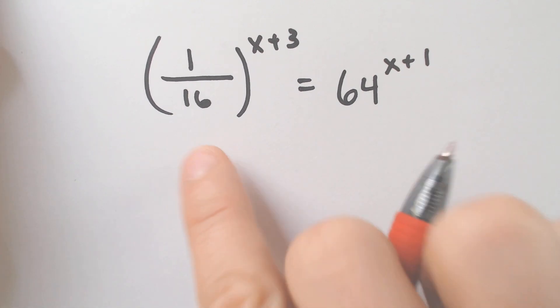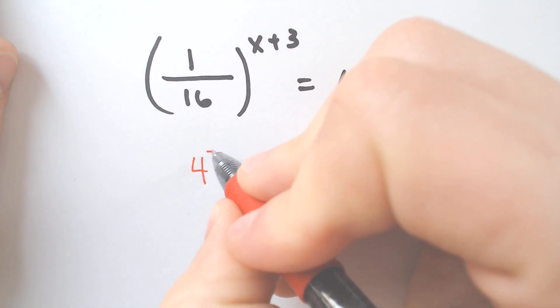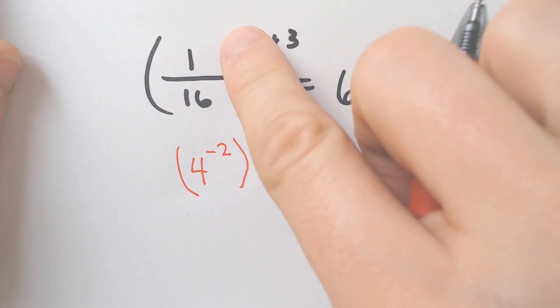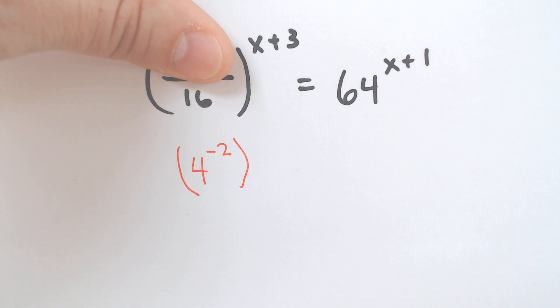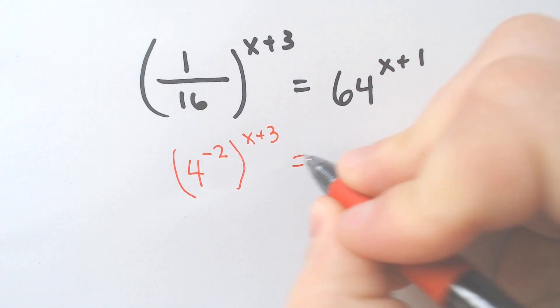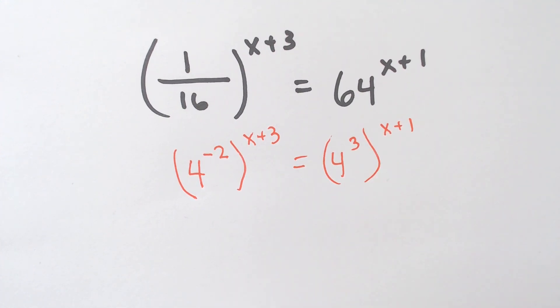I know that 4 squared is 16. Because it's 1 over 16, I just make it a negative 2 power instead of a regular 2 power. So if it's 1 over 16, you just make it a negative 2, and everything else remains the same. Just think of it as a regular 16, and then make it negative 2. x plus 3. 4 to the 3rd power is 64, in case you did not know.